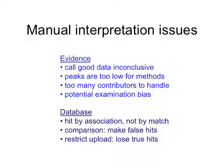There are issues with manual interpretation, both for evidence in a particular case and for databases when doing searches on cold cases. With evidence, the problems are these: you can call very good data inconclusive. There may be peaks too low for human methods to look at visually with thresholds, or too many contributors to handle beyond two or three people. Human analysts may be uncomfortable with their methods. And there's potential examination bias — Edir Edmond gets mentioned in every talk — he's done studies showing how there is potential bias when people make these direct comparisons between data and a suspect.